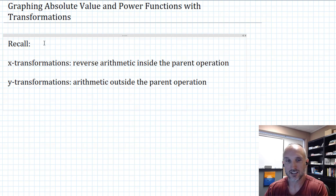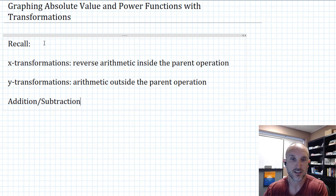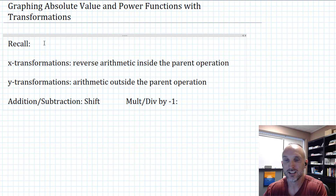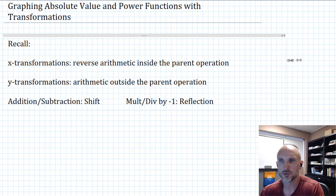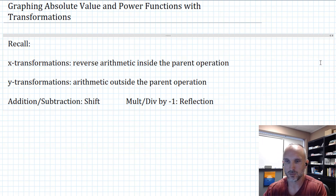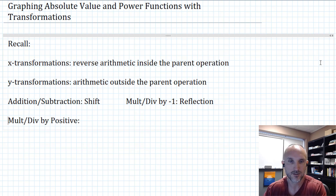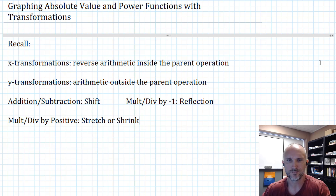Let's talk about three types of transformations. If you have addition or subtraction, that's going to be a shift. If you have multiplication or division by negative one, that's a reflection. And finally, the one most people struggle with the most: if you have multiplication or division by a positive, then that's a stretch or a shrink, or compression if you will. So those are the things we've talked about before. We're going to put it all together now with some transformed power and absolute value functions.